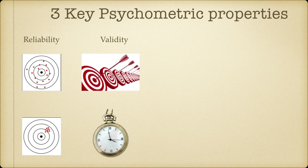In behavioral science, there are multiple ways of looking at and examining validity, and we will see that in detail in the level two course. The third psychometric property of a test is about the reference point for comparison — to know if a score is low, medium, or high. It is commonly referred to as norms.